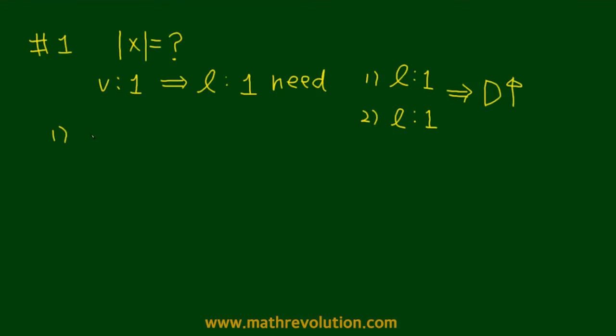Taking a look at them individually, condition 1 says that x is equal to the negative value of the absolute value of x. This implies that x should be less than 0, but there are so many ways that x could be less than 0.